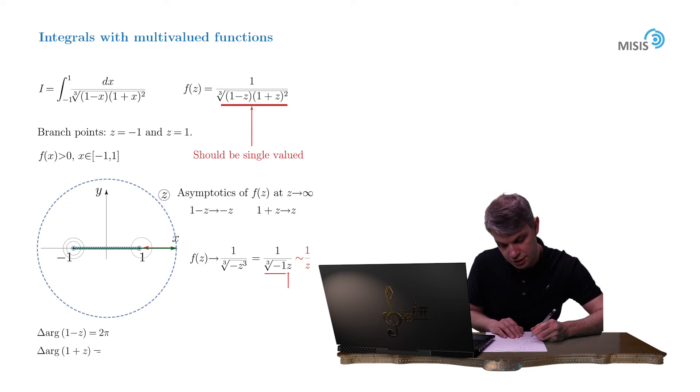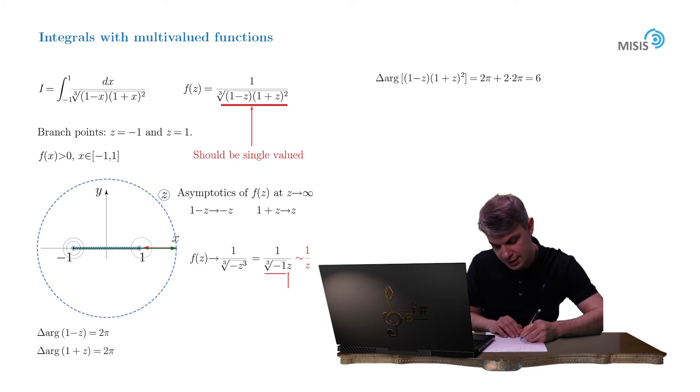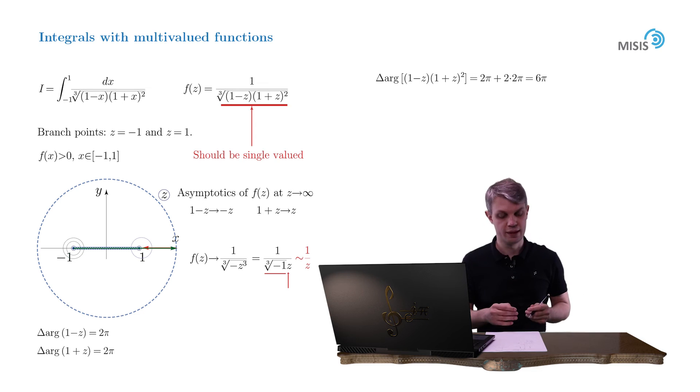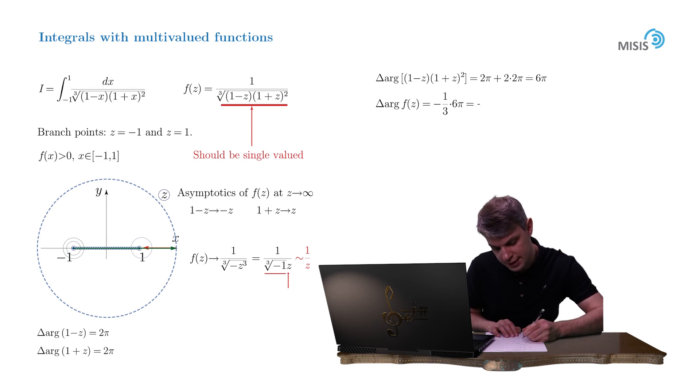And that means that the full change of the argument under the cubic root is simply given by 2π, which comes from 1 minus z, plus 2 times 2π stemming from (1+z)², which gives 6π. Minding the cubic root in the denominator, we come to the conclusion that the total change of the argument of our multivalued function f(z) is simply negative 1 third times 6π, which gives us 2π.